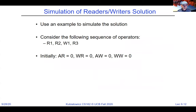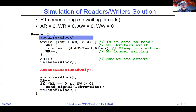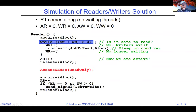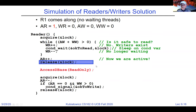Now let's trace through an example with: read from thread R1, read from thread R2, write from thread W1, and read from thread R3. All variables start at zero. R1 arrives, acquires the lock, checks AW + WW > 0 — the answer is no — so AR++ gives us one, and we release the lock. We can safely do AR++ because we have the lock, so it's a critical section and we don't worry about atomicity issues.